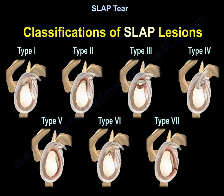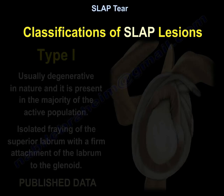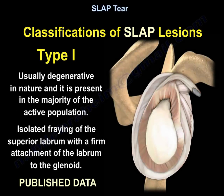Type 1 is usually degenerative in nature and is present in the majority of the active population. It is characterized by isolated fraying of the superior labrum with a firm attachment of the labrum to the glenoid.